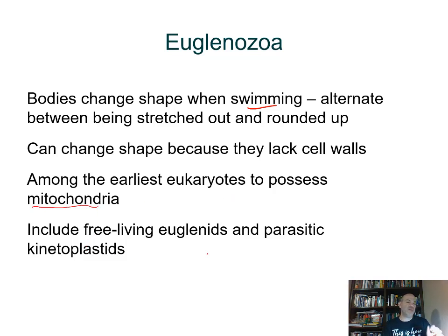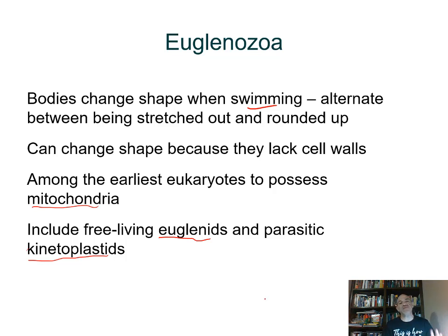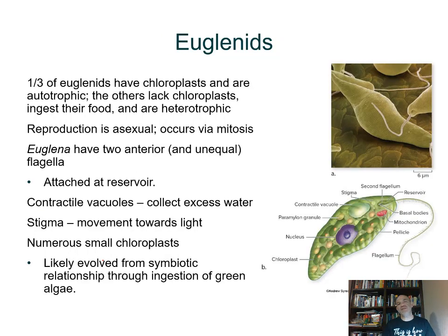What ties the euglenins together — like the one we saw in the video with the flagella moving and green because they have chloroplasts — is that they're free living and don't live with other organisms. Here the kinetoplastids have a symbiotic relationship that's harmful to the host.